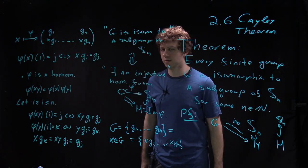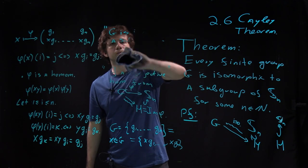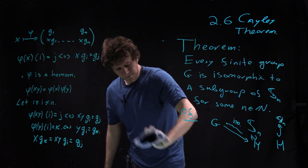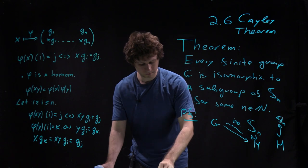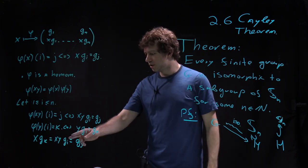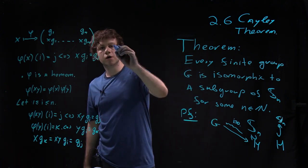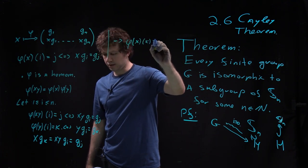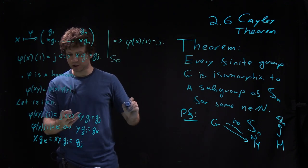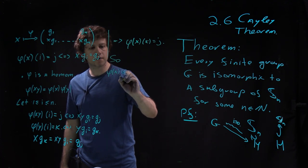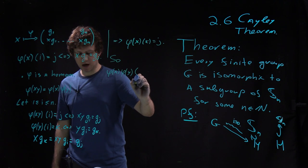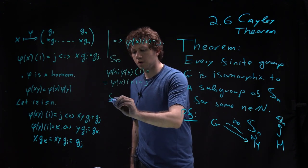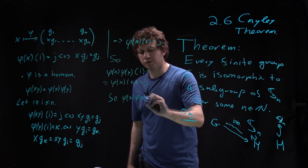Let me now erase this part and I finish the proof here. So X times g_k equals XY g_i equals g_j. So then it means that phi of X applied to k is equal to j. So we now can check that if I take phi of X phi of Y, it's a composition of maps applied to i, I get phi of X applied to k, I get j.